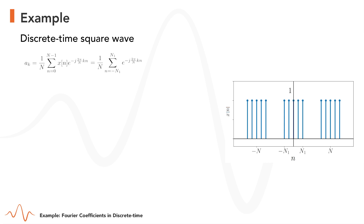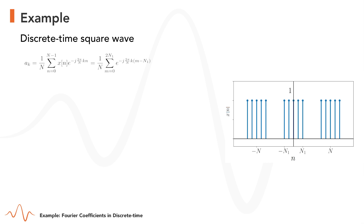We will now apply a new change of variables, making M equals n plus capital N1. The new limits of the summation run from n equals minus capital N1 until capital N1, which in terms of M gives 0 and 2 capital N1, respectively. The factor e to the power of minus j 2 pi over capital N times K times n is replaced accordingly, and since the second factor does not depend on M, we can move it in front of the summation.